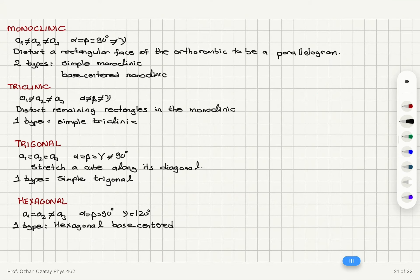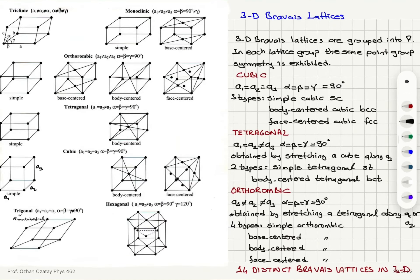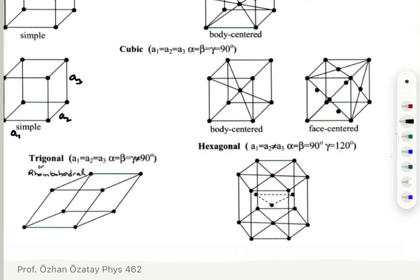We also have trigonal. A1, a2, and a3 are equal, and alpha, beta, and gamma are equal but not equal to 90 degrees. Trigonal structure is obtained by stretching a cube along its diagonal. There is only one type: simple trigonal.